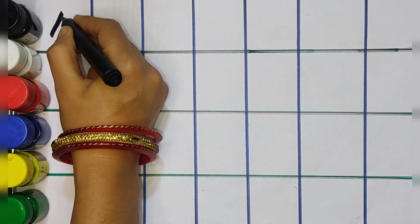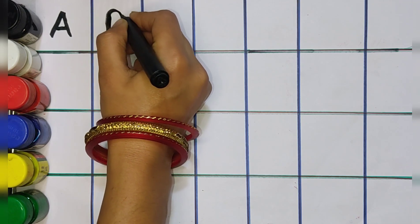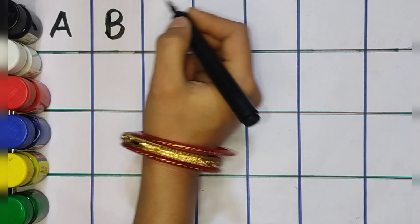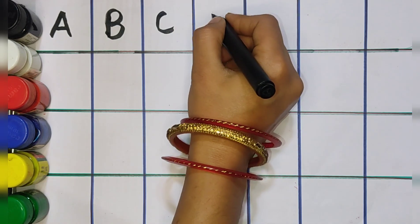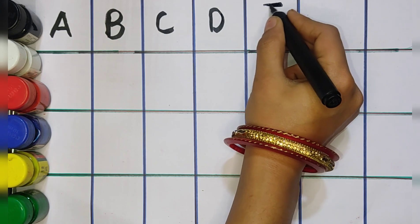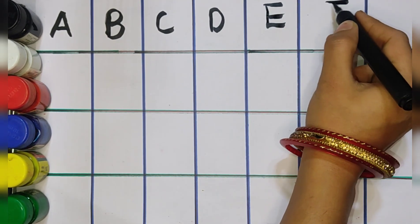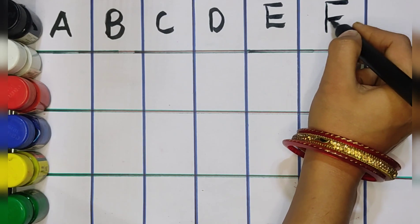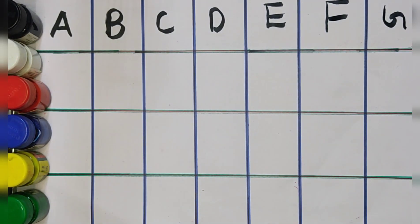A, A for apple. B, B for ball. C, C for cat. D, D for dog. E, E for elephant. F, F for fish. G, G for girl.